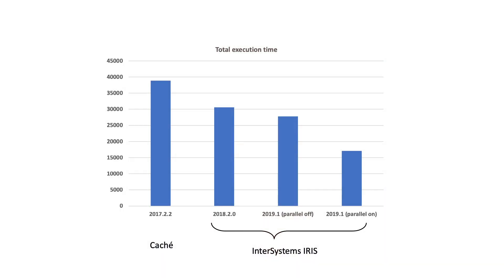InterSystems has always been about high performance, and this release is no different. This chart shows a customer's benchmark with their real application. Moving from Cache to InterSystems IRIS got them a bit over 20% speedup. Version to version, 2019.1 is a little bit faster than 2018.2, but more importantly, we've included an auto-parallel feature with 2019.1 that gave them a big boost. Altogether, this gave them a 56% speedup, more than double the performance.